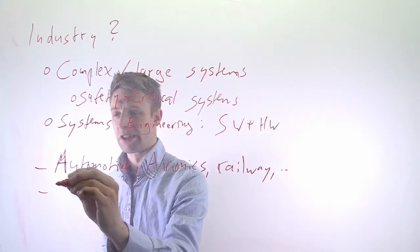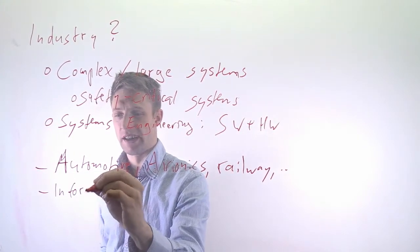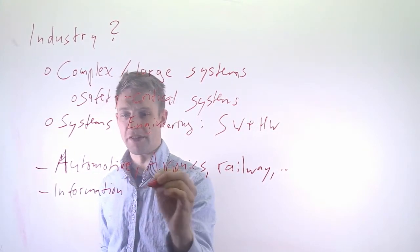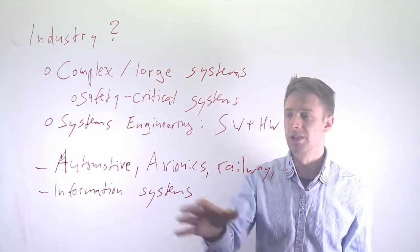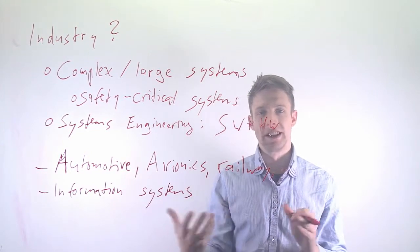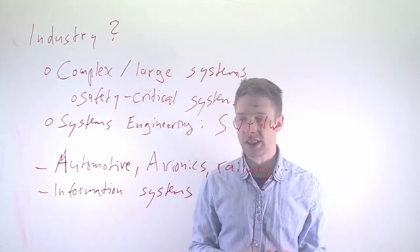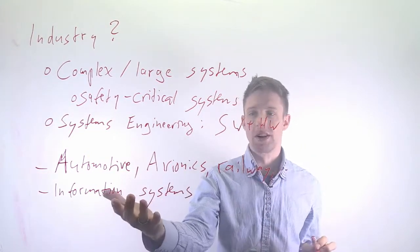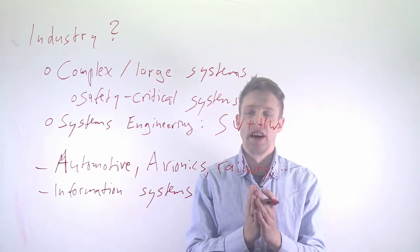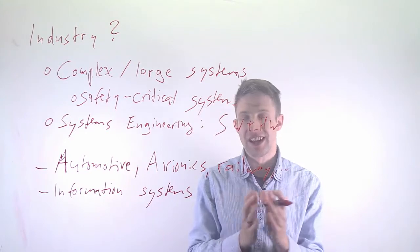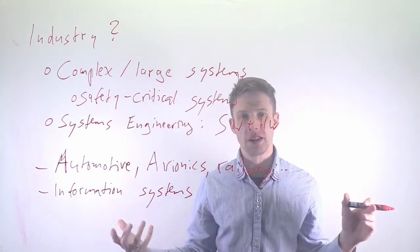But on the other end of the spectrum, we also see modeling in, for example, information systems. So these large systems that are used by companies to store and retrieve information. I've mentioned them several times in the course. The course book talks about the medical system.